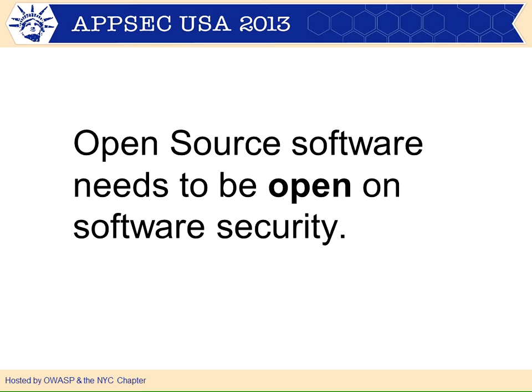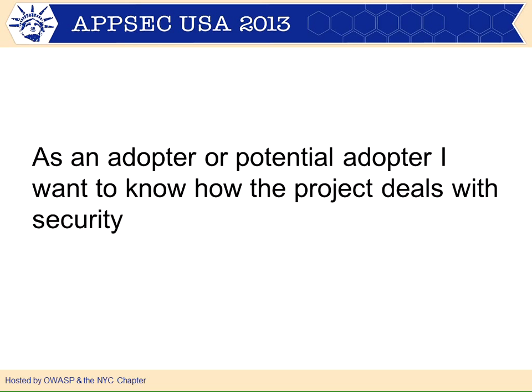Some open source projects are doing security really well, and then there are some that don't have any application security working group at all. When you're looking at an open source project, from the security guy's standpoint, you want to know: how secure is this project? Are they doing source code review? Do they do dynamic scans? Security architecture — are they making the correct design decisions at the beginning? Building security in at the beginning is where we want to be. If you can position your project so that you do security and here are the artifacts I produced, that can be a fantastic selling point for your project.